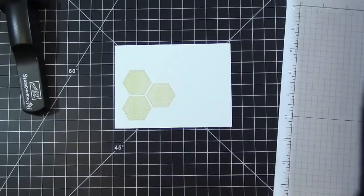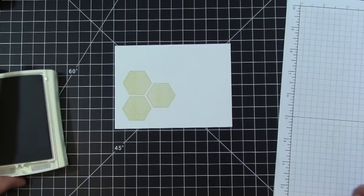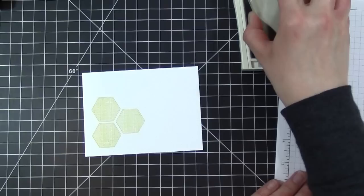I'm going to take Smokey Slate and from the Gorgeous Grunge Stamp Set we have this really cool spattered paint look. I am going to be inking this up and I have a piece of scrap paper on the side.